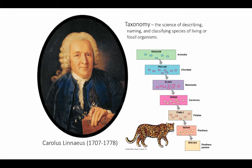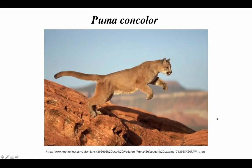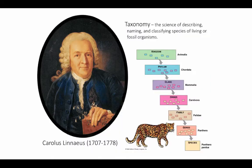Linnaeus also introduced binomial nomenclature so that we refer to a particular species by its genus and species name. So now when we come across this animal — I'm from California originally and still like to call it a cougar, even though down here in Florida we call it a panther — when talking to other scientists, I can refer to Puma concolor. We can all agree on what animal that is and discuss it scientifically. So it's very useful that we all have this common naming and classification system to communicate as scientists.